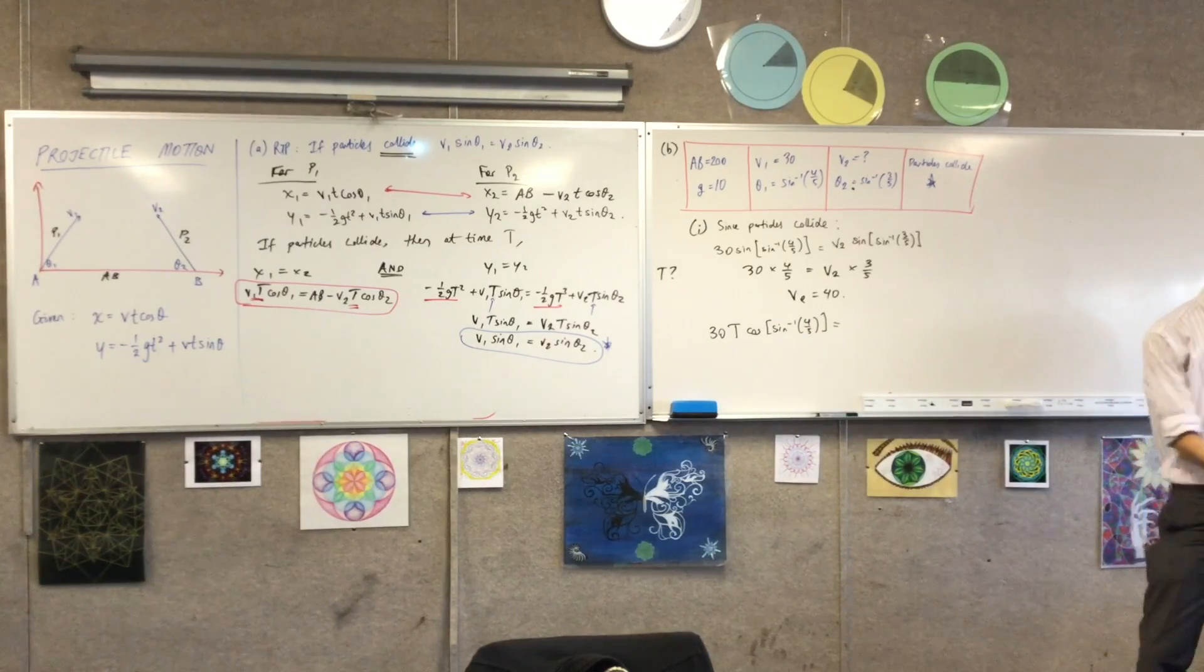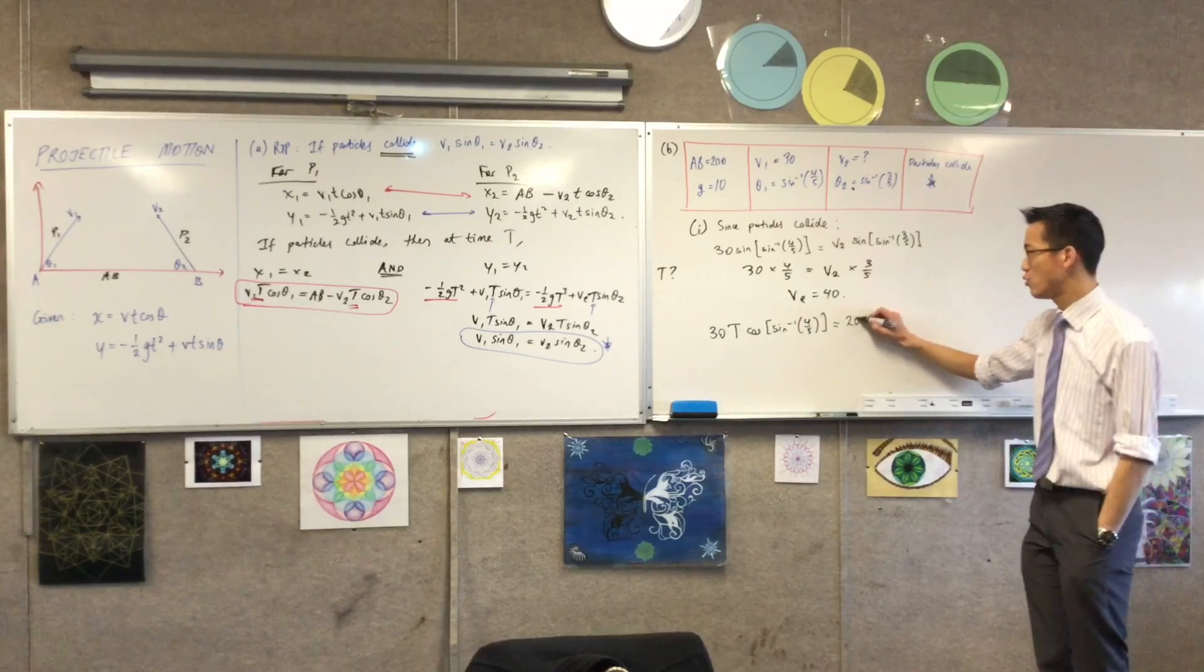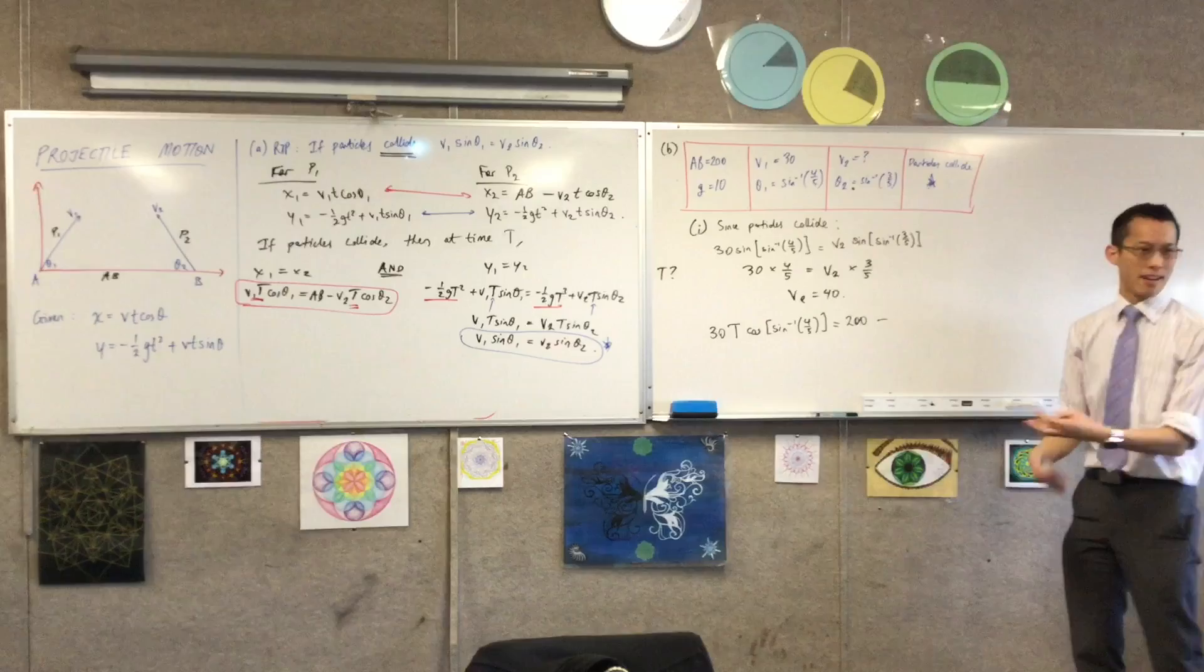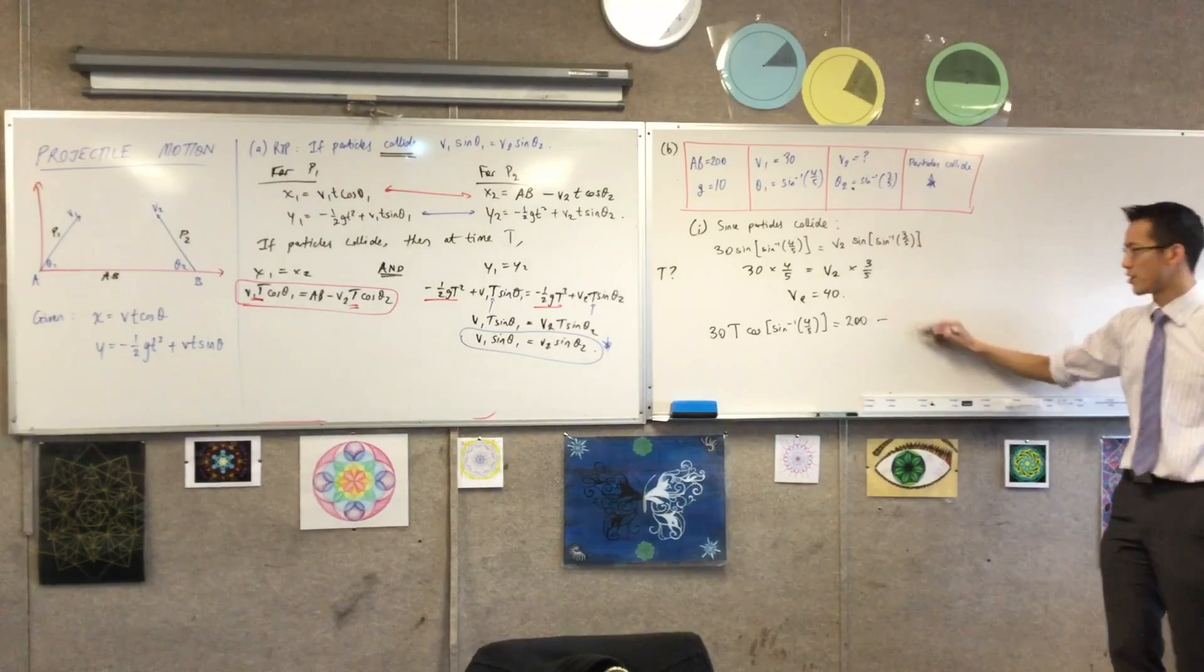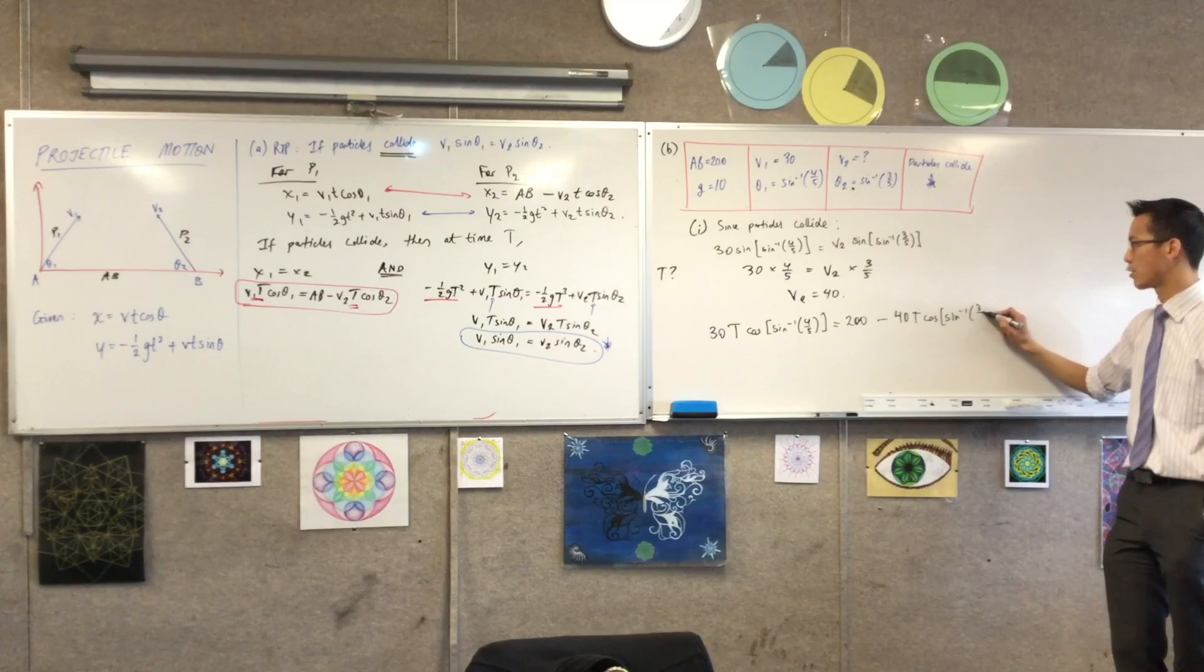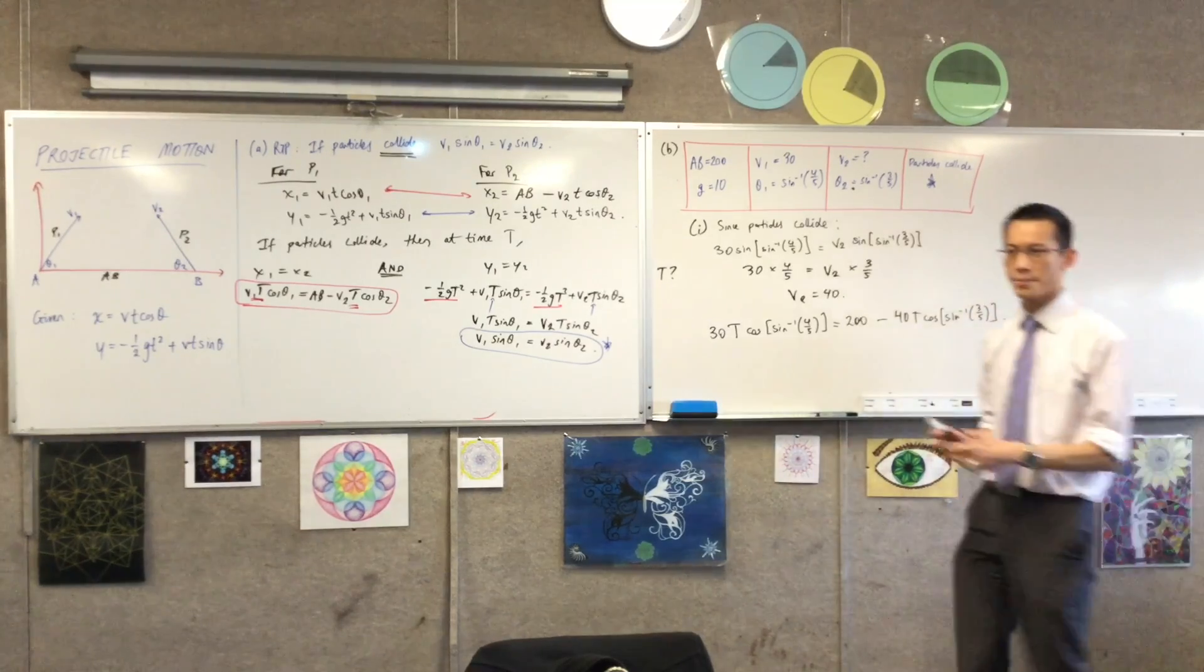The right-hand side, I know the value of AB now. I know its magnitude. So, that's my 200 distance between the two. And then I subtract. I know what V2 is now. I just worked it out a line ago. So, 40 T cos of. And then there's this slightly different angle.